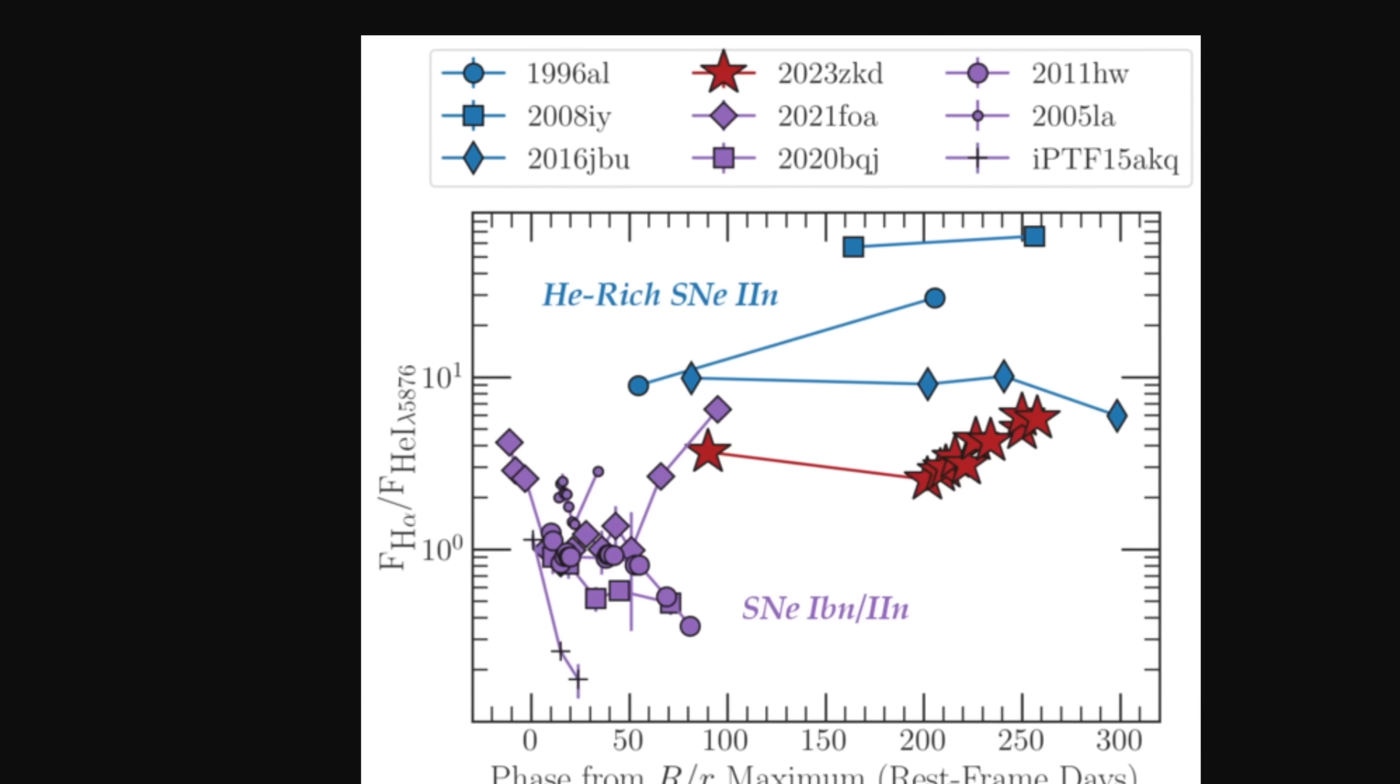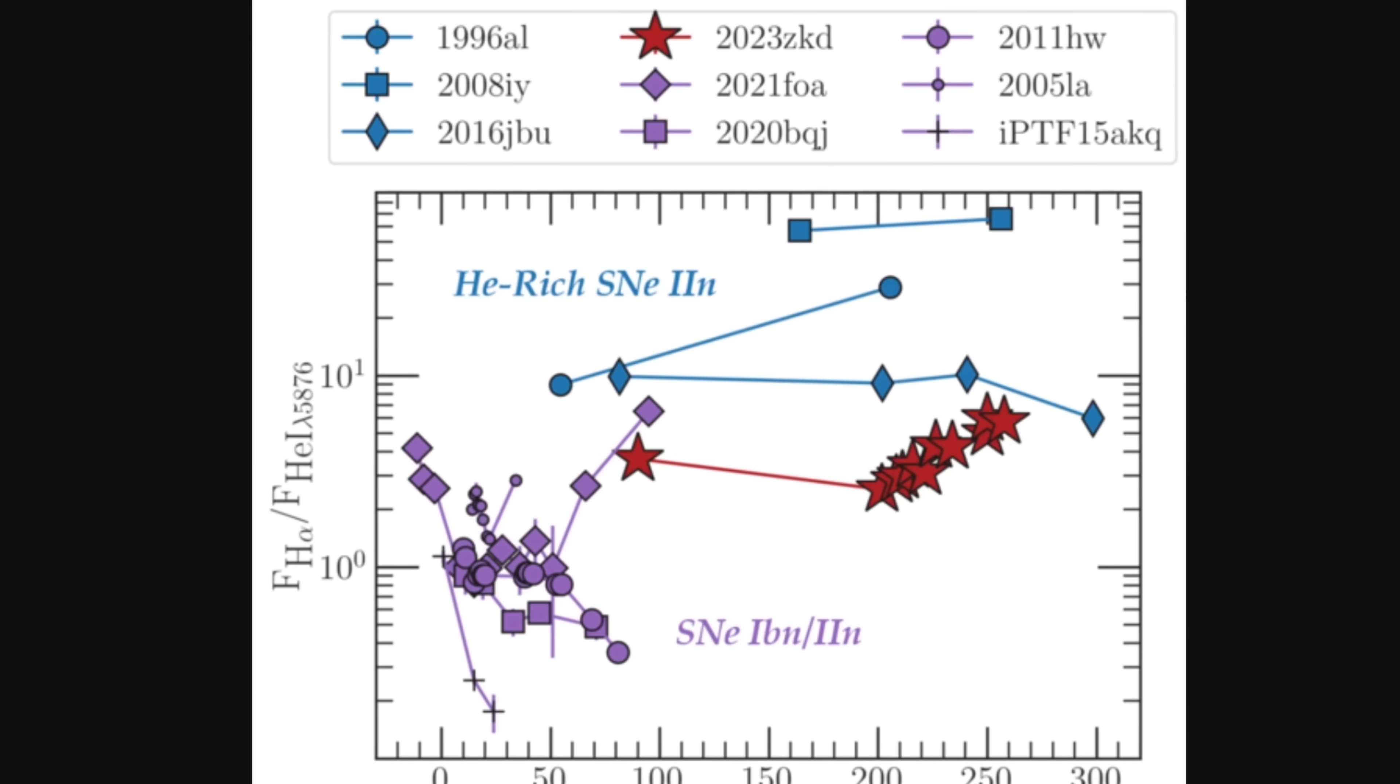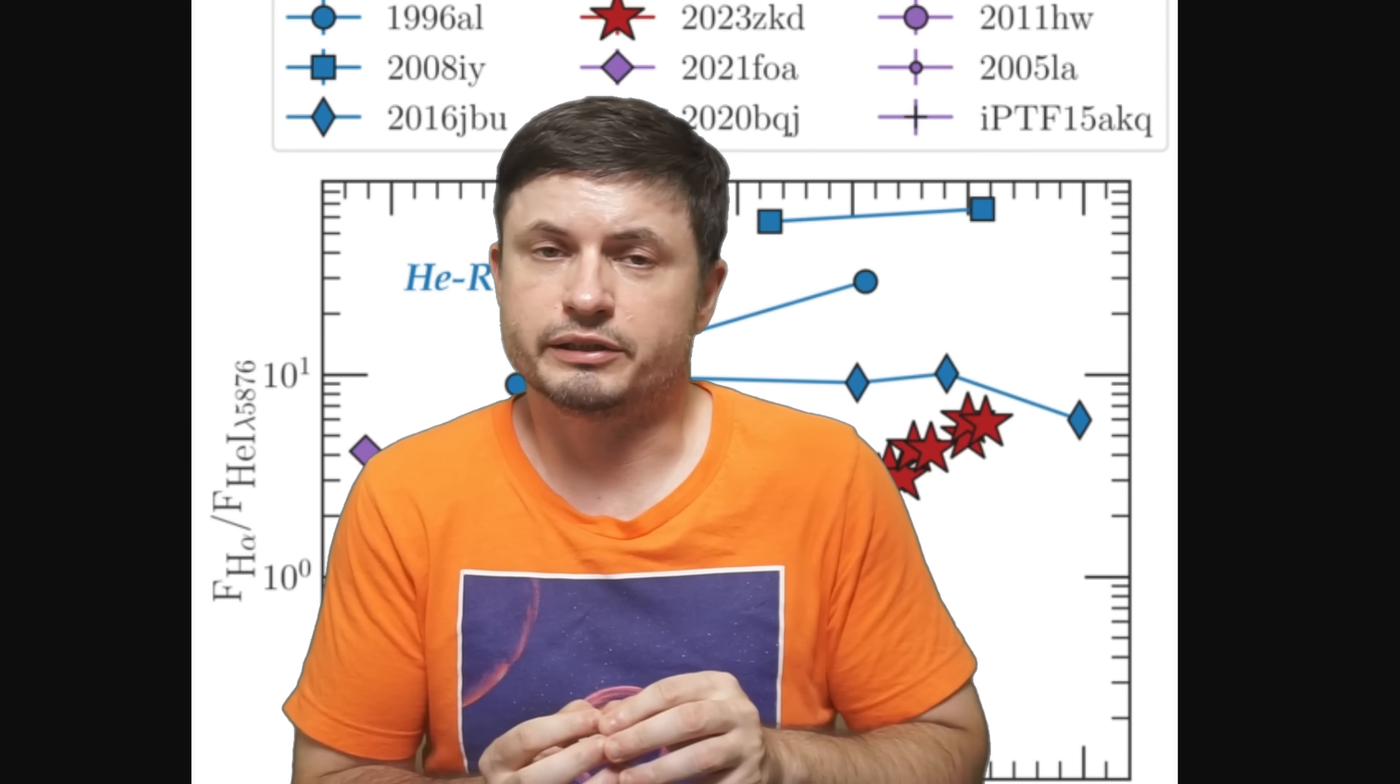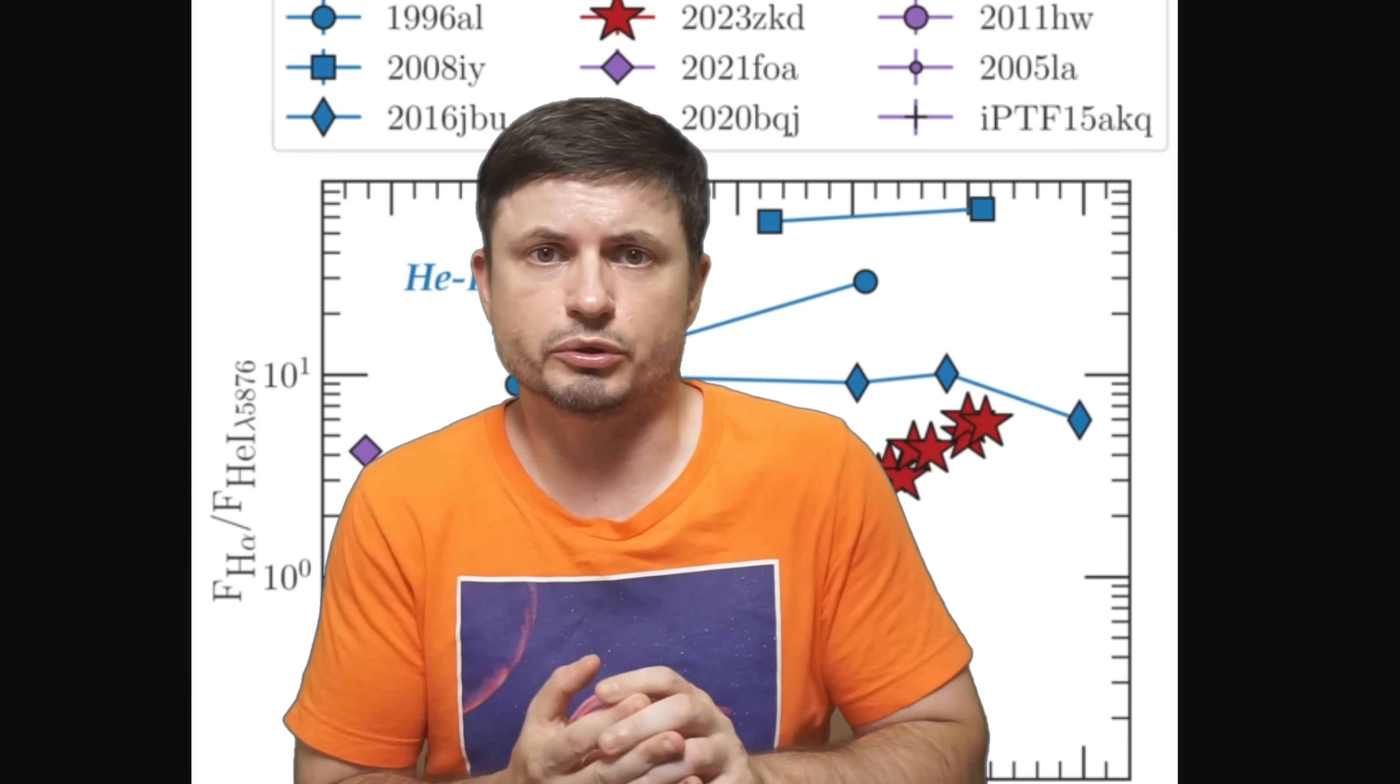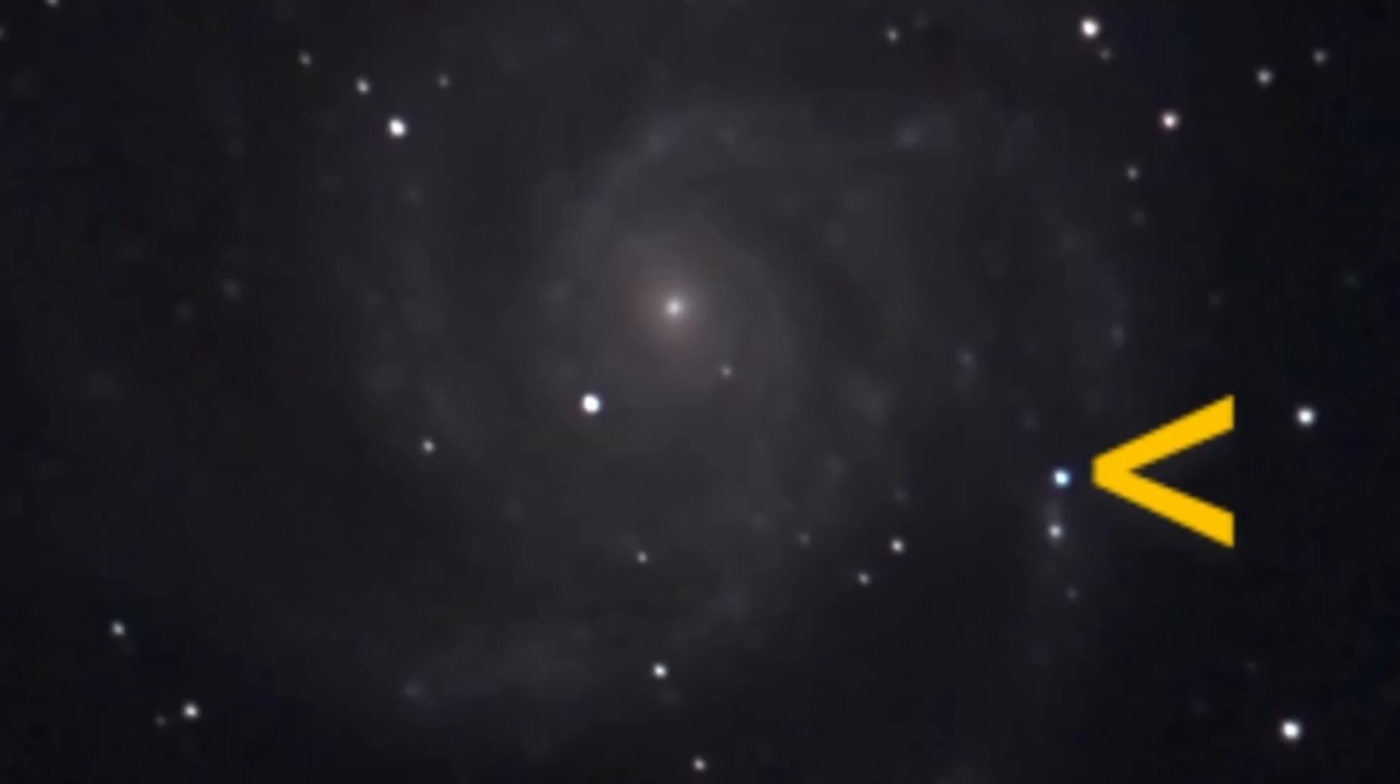And to try to understand this unusual behavior, researchers analyzed archival data from a lot of previous observations, uncovering something even more extraordinary. This unusual system has actually been brightening for several years, even before the initial explosion. For approximately four years, this object was getting brighter and brighter. And this unusual long-term activity before a supernova is super rare.